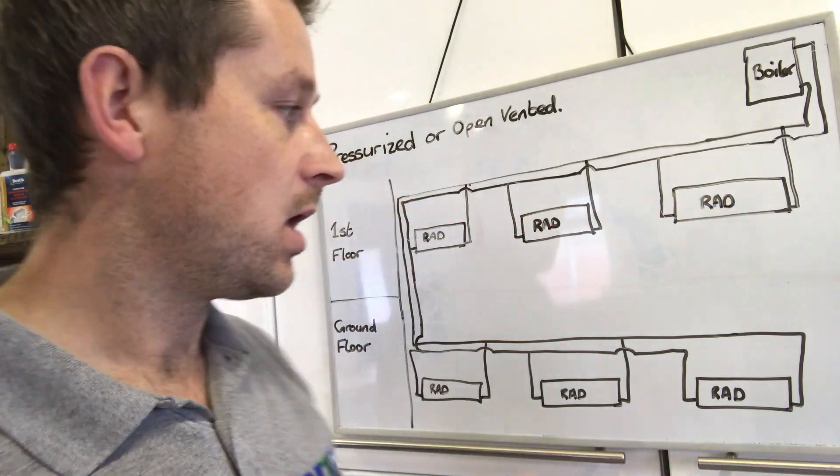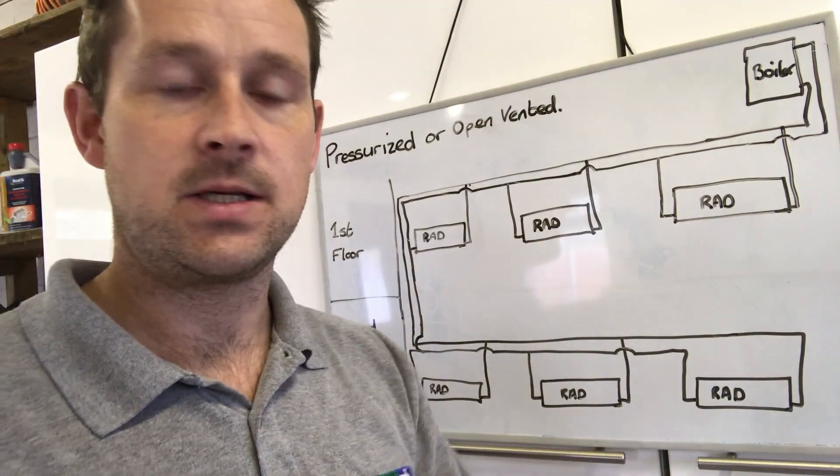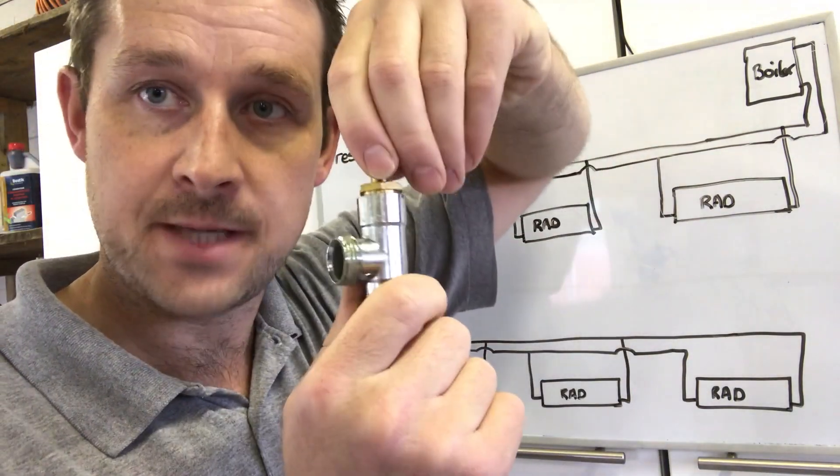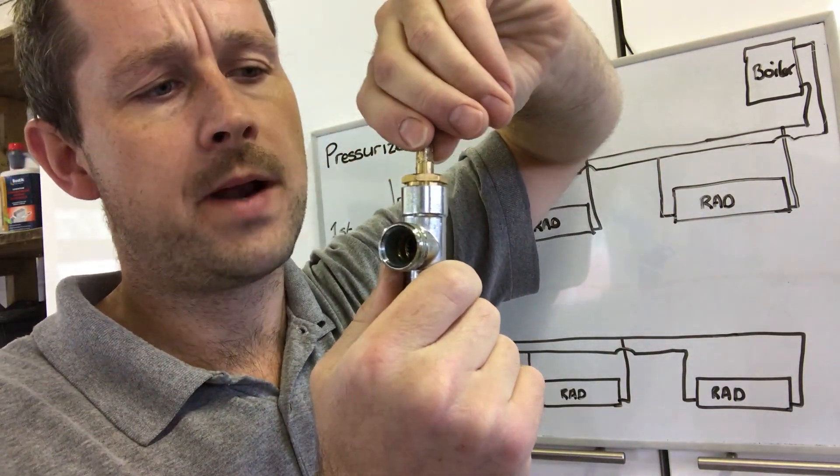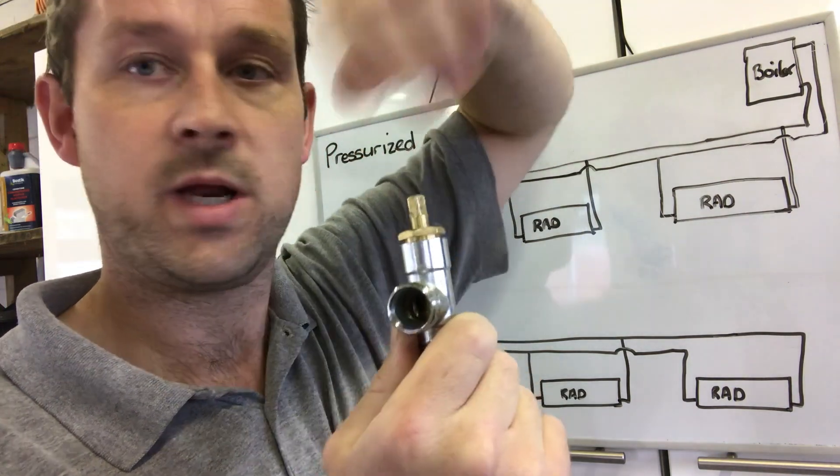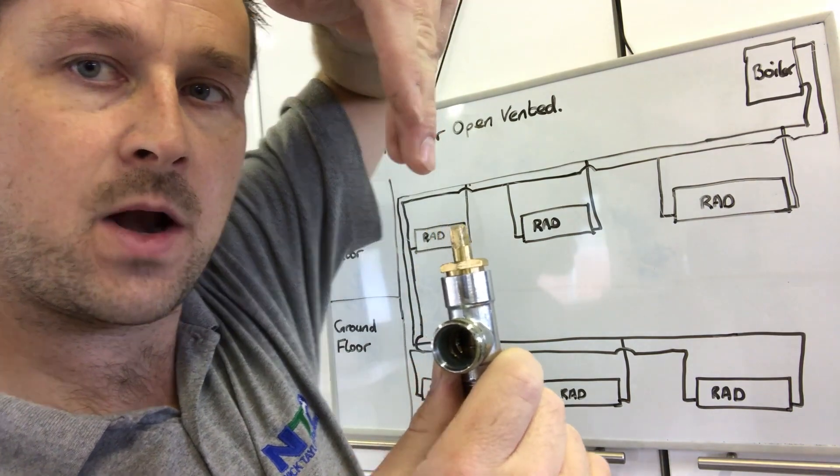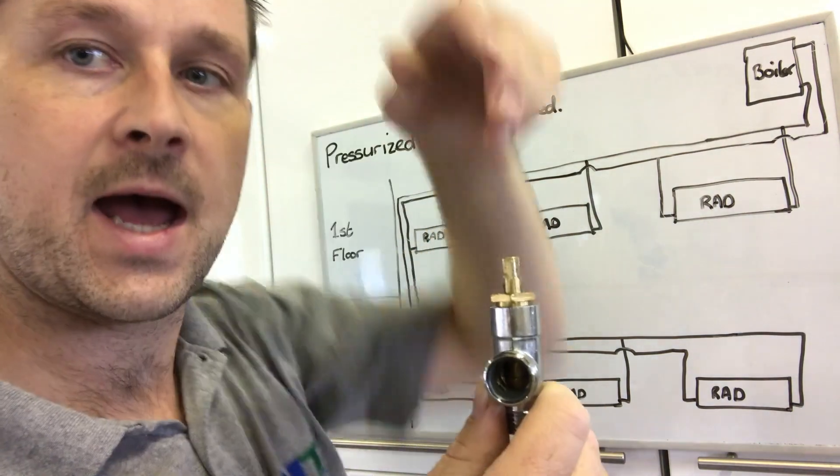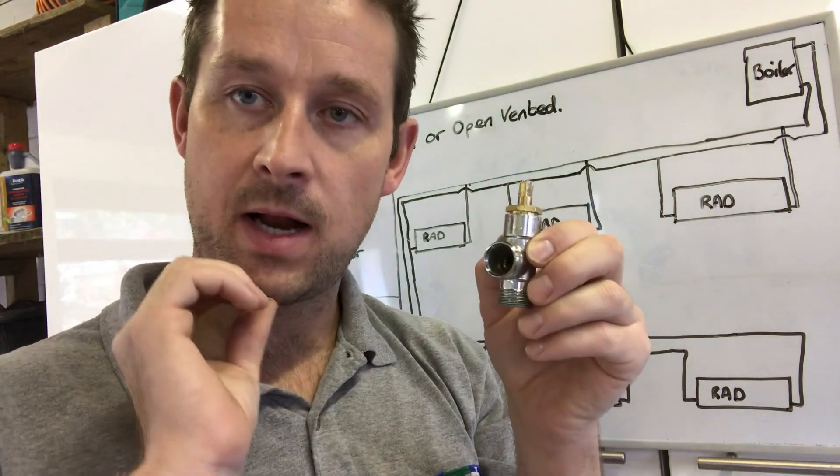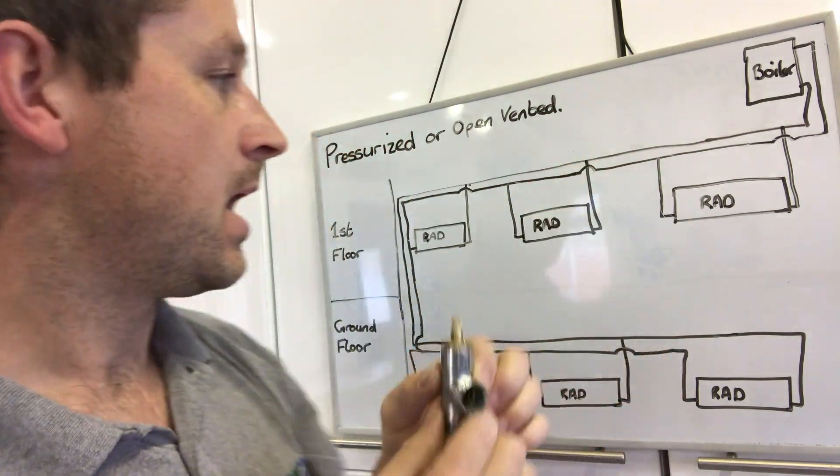Completely close it and then open it one whole turn. So when you get your spanner on it, you've got half a turn and then obviously turn it again another half. What that will do is let a trickle of water through.